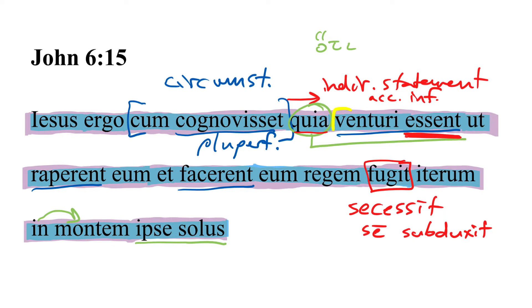And in this case, we've got a further wrinkle, which is this phrase, venturi essent is periphrastic. That is, it's an optional, sort of roundabout way of indicating something that is anticipated in the future, but all from the perspective of the past. So, Jesus, when he had perceived, okay, so we're in the past already, the greater past, by the way, there's going to be something more past, which is cognovisset, and then some things which are less past, raperent et facerent.